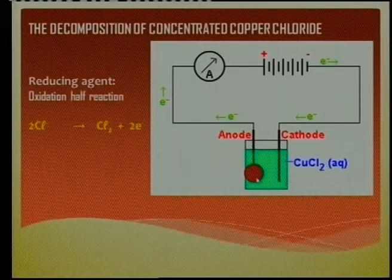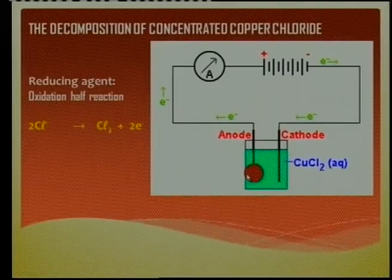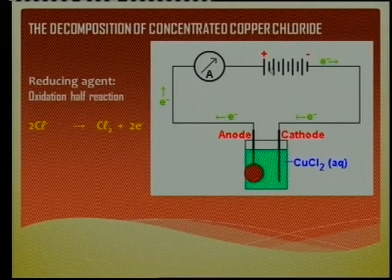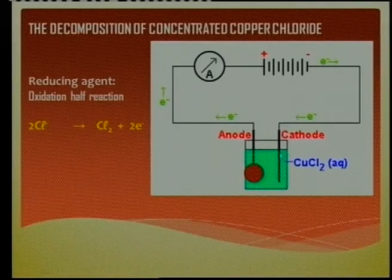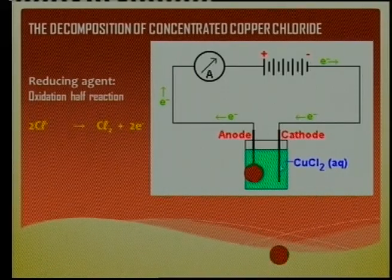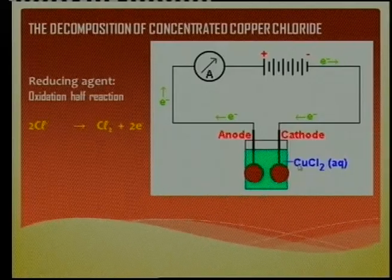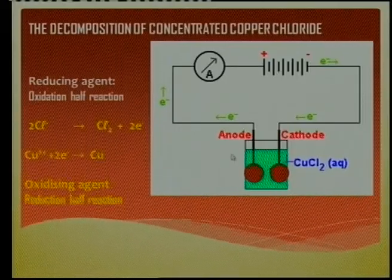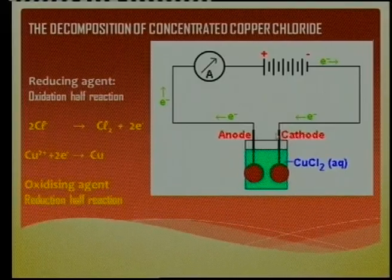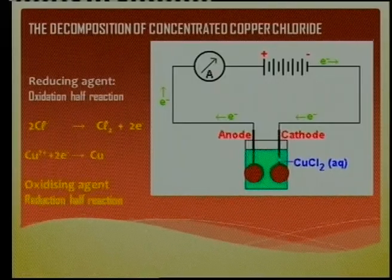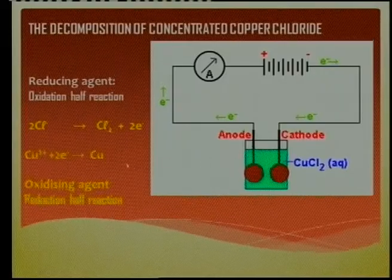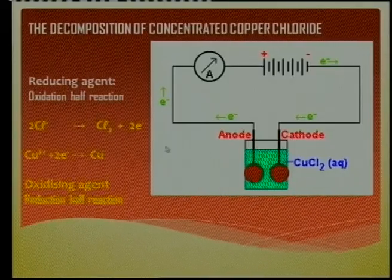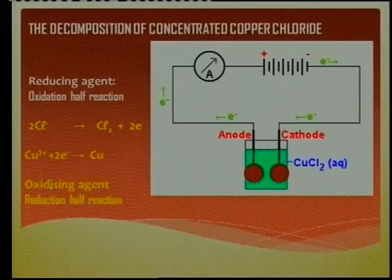So the chloride ion comes to the anode, loses electrons, and the gas bubbles off. The electrons move through the ammeter or voltmeter, into the battery, and the battery pushes them out to the cathode. At the cathode, the electrons meet copper ions in solution, which receive those electrons and become copper metal — deposited at the cathode. The cathode increases in mass. The copper ions in solution are called the oxidizing agent.